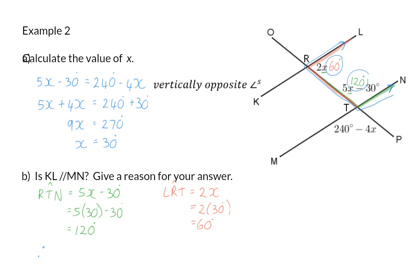So, we can answer the question saying yes, KL is parallel to MN, and the reason for that is because the co-interior angles add up to 180 degrees. In this example, we now also used algebra in our geometry, and we saw that all the properties can also be used backwards. In this case, we knew that the co-interior angles add up to 180, and we could then accept that the lines are parallel.